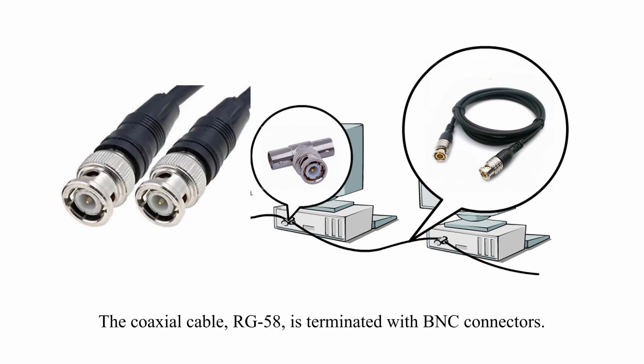The coaxial cable used in Thinnet is the RG58, terminated with BNC connectors.